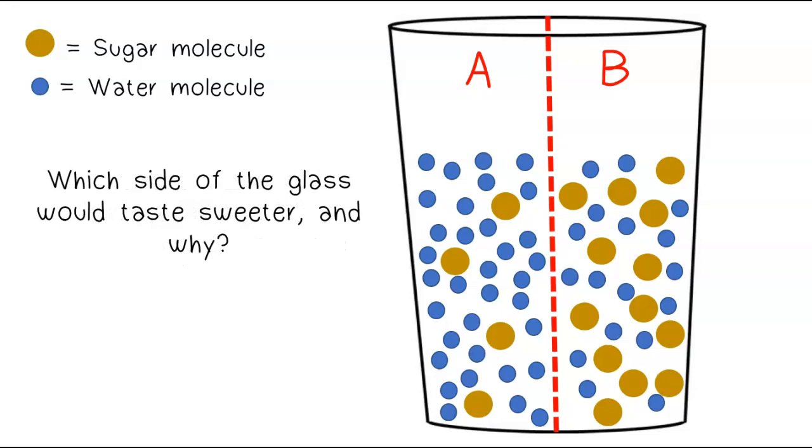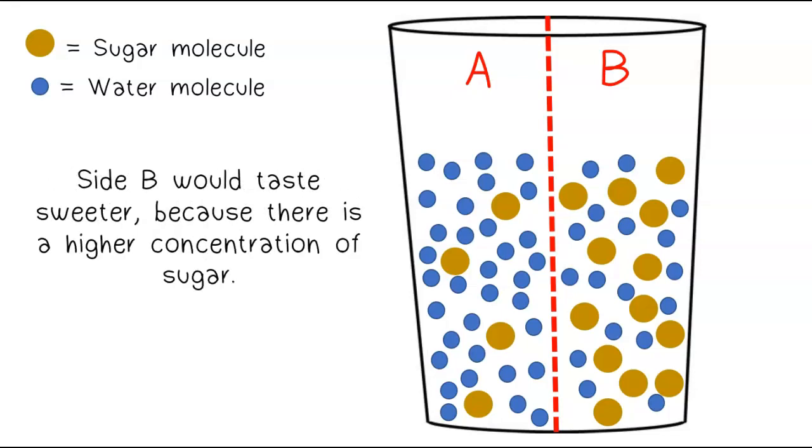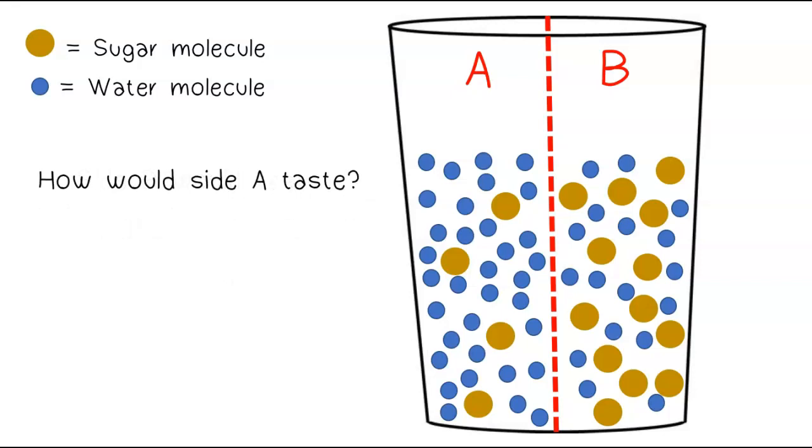Which side of the glass would taste sweeter, and why? Side B would taste sweeter because there is a higher concentration of sugar. How would side A taste?